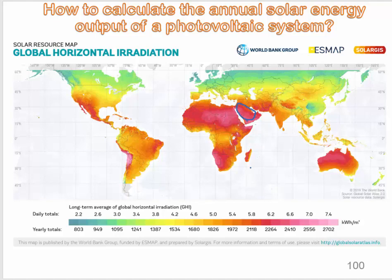Looking at the map, we can see the Middle East region. For Saudi Arabia, the color indicates about 2600 kWh per square meter per year. The map shows both a yearly scale and a daily scale. Good solar radiation is also visible in South Africa, Australia, and Africa.